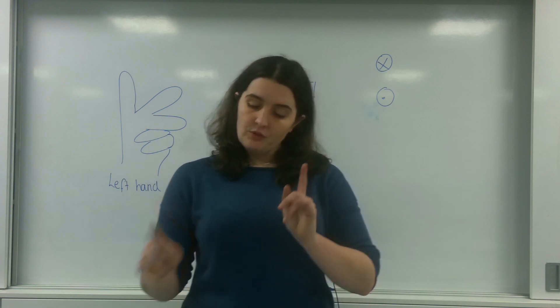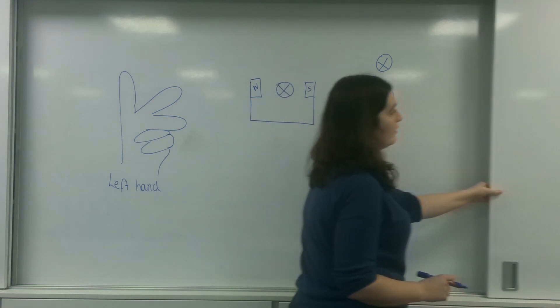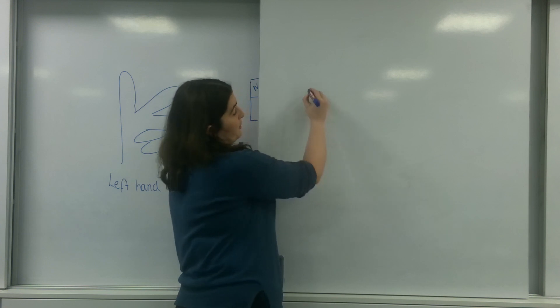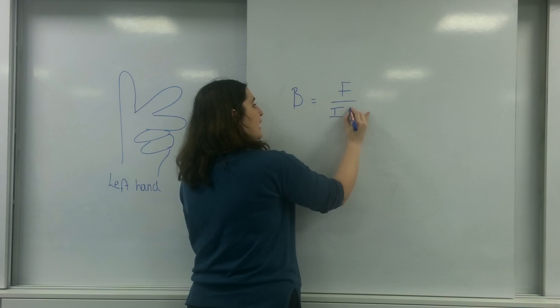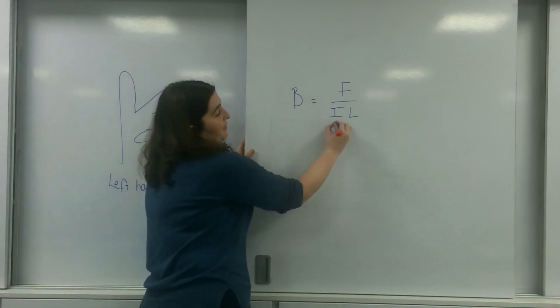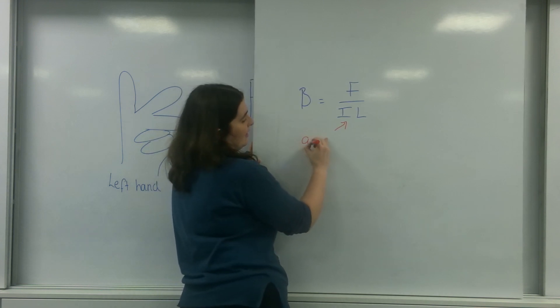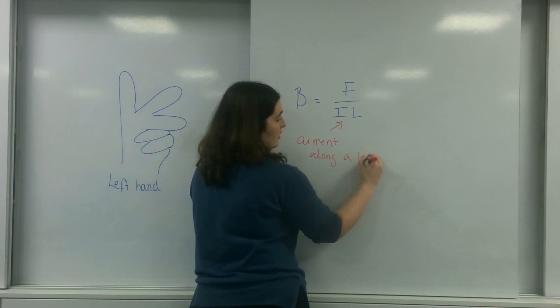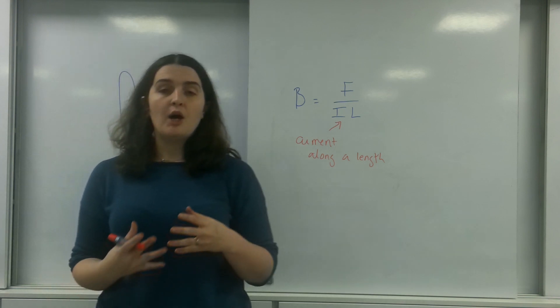Just a reminder, magnetic fields are represented, the field strength is represented by the equation B equals force over IL. And what that is telling me here is that a current along a length is the properties that are affected by the field.